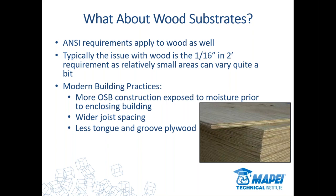If joists are on 24-inch centers, it's going to be very difficult to achieve flatness tolerances. The products being used in construction now — it's getting rarer and rarer to see three-quarter inch exterior-grade plywood. You're seeing more and more OSB products on the market, and not seeing tongue-and-groove as often. These are all just challenges you need to be aware of.